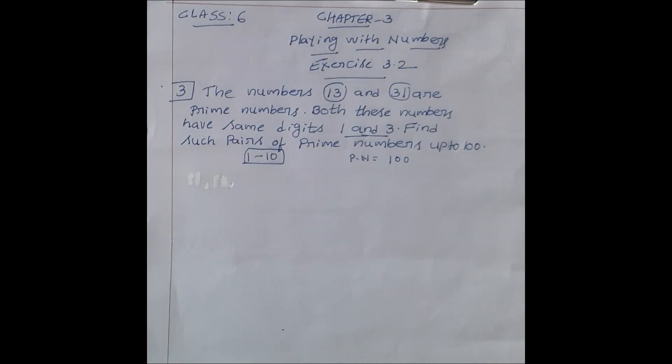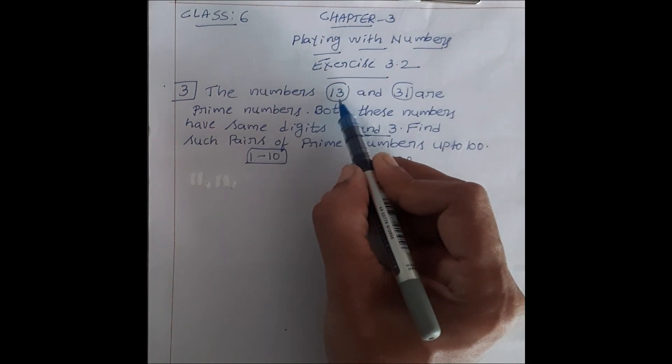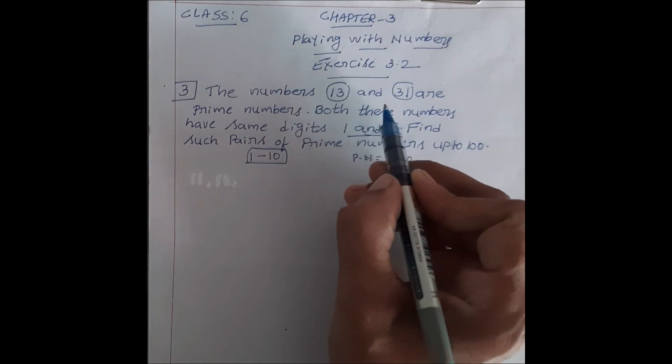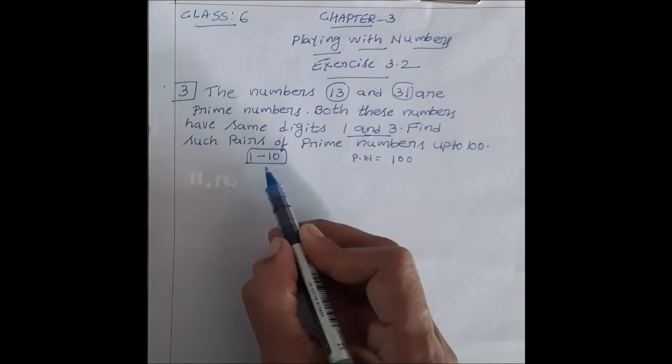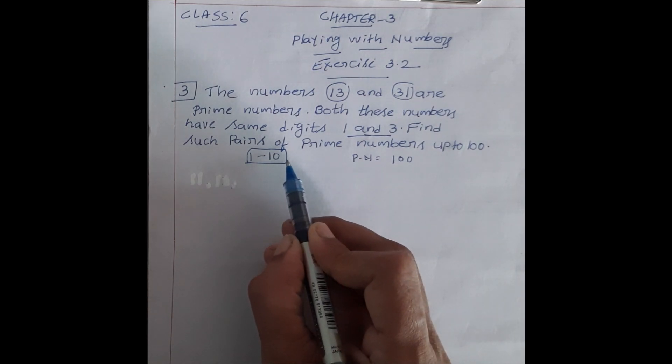Abhi, pehle hume 2 digits hai, 1, 3, 3, 1. Idhar bhi 2 digits hai, idhar bhi 2 digits hai. Abhi 1 digit prime number ka zaroorat nahi hai, iska 1 to 10 ka prime numbers nahi likhenge.